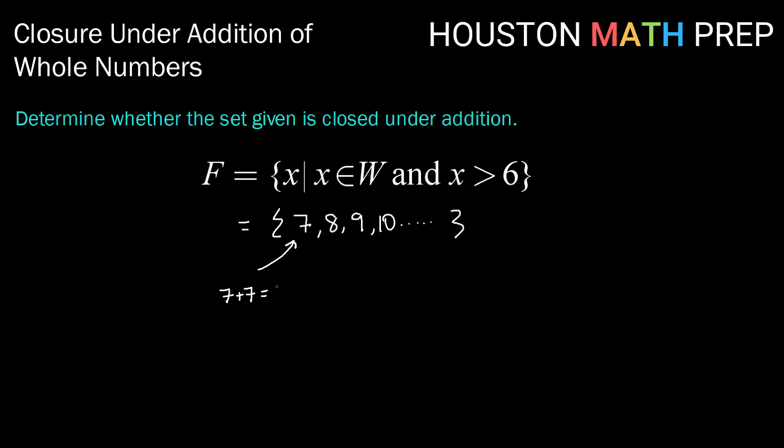That gives me 14, and 14 would be about there, so 14 is in the set. The next smallest possible sum would be 7 plus 8. So now adding the two smallest values, and that is 15. Well, 15 would be in the set.